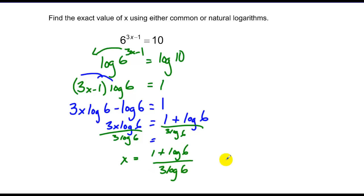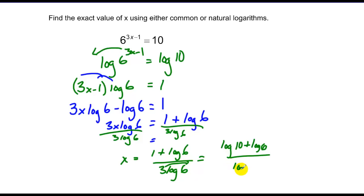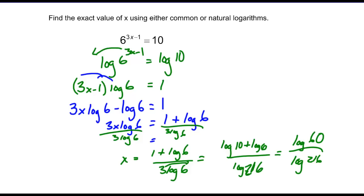This gives x equals 1 plus log 6 over 3 log 6. The book may clean this up: since 1 equals log of 10, and the 3 can go up as a power on the 6 making it log of 6 cubed or log 216, and 10 times 6 goes to 60 in the numerator as log 60, it could be written as log 60 over log 216. On a test I'd accept the earlier form, but a multiple choice test like the SAT may clean it up further.